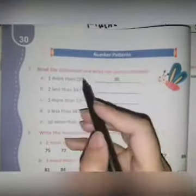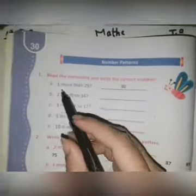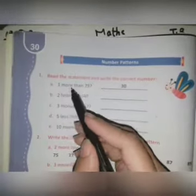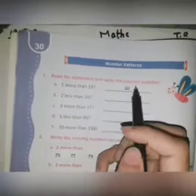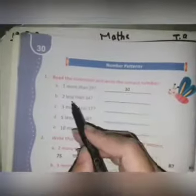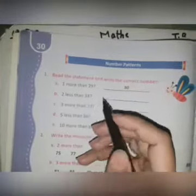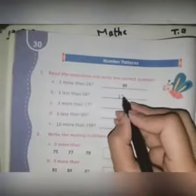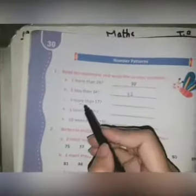Number patterns: Read the statement and write the correct number. Number A: one more than 29, the answer is 30. Two less than 34. Now you have to subtract 2 from 34, the answer will be 32.